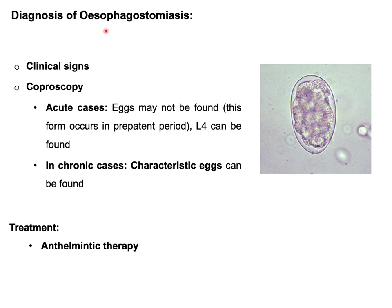Diagnosis of esophagostomiasis involves looking for the clinical signs described, and performing coproscopy. In acute cases, eggs may not be found but L4 larvae can be found in the feces. In chronic cases, characteristic eggs can be identified. For treatment, broad-spectrum anthelmintics can be used for nodular worm disease.